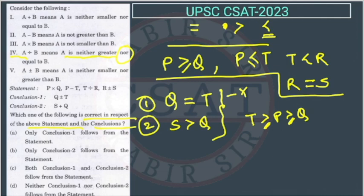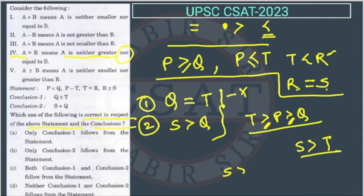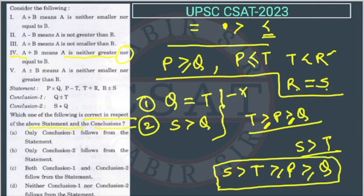For Conclusion 2, we find the relation between S and Q. Since R equals S, we substitute S for R. From T < R, we get T < S, meaning S is greater than T. Then since P ≥ Q and P ≤ T, substituting gives S greater than Q as well. So Conclusion 2 is correct, but Conclusion 1 is not certain. The answer is option B only.